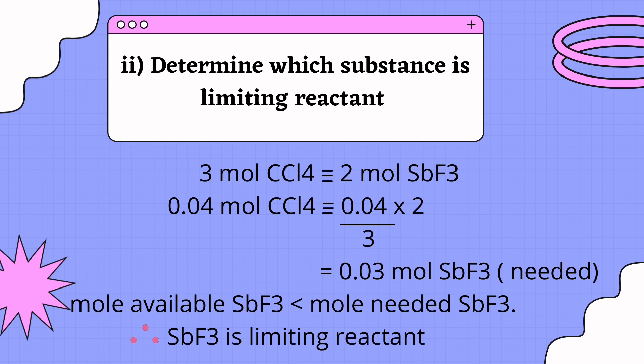We compare 3 moles CCl4 with 2 moles SbF3. With 0.04 moles CCl4, in order to get needed moles of SbF3, 0.04 multiplied by 2 and divided by 3, we got 0.03 moles SbF3 needed. Since moles available of SbF3 is less than moles needed of SbF3, we can conclude that SbF3 is the limiting reactant.